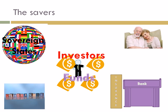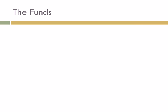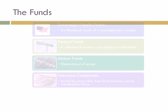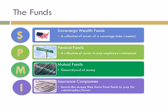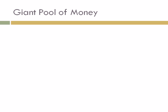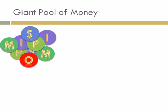But what exactly is a fund? Funds are collections of assets such as cash, bonds, and other financial products that are invested on behalf of a larger company, organization, government entity, or group of people. Examples include sovereign funds, which are a collection of assets collected by the state; pension funds, which are assets used to pay employees' retirement; mutual funds, which are a general pool of money invested on behalf of a group of investors; and insurance funds, which are invested by insurance companies as a means of paying for catastrophes. Putting all these funds together, we get the giant pool of money.